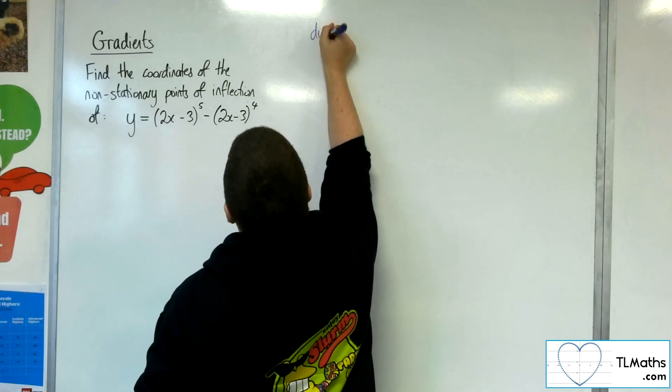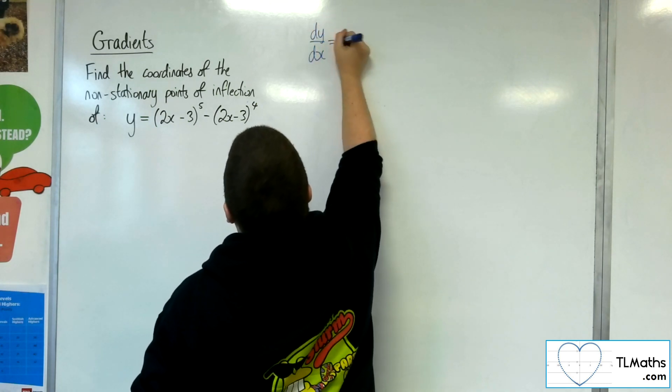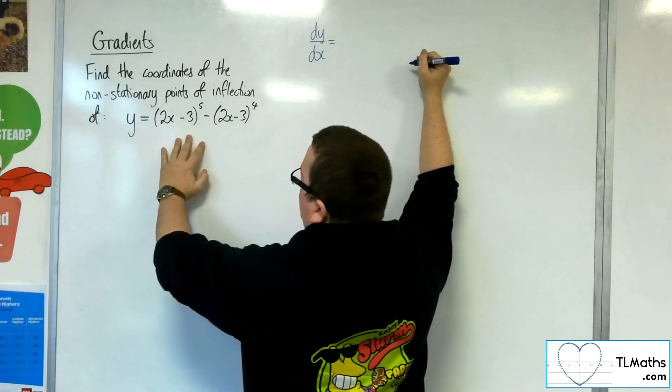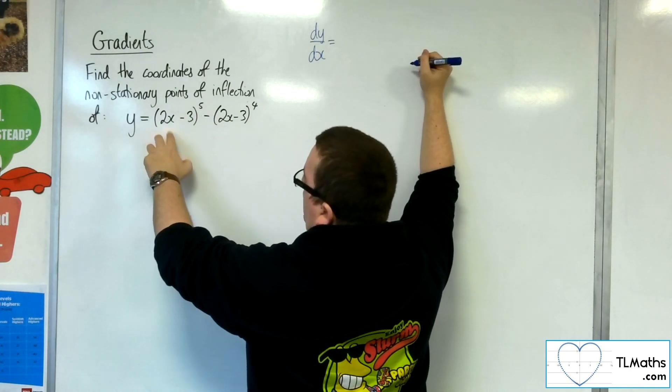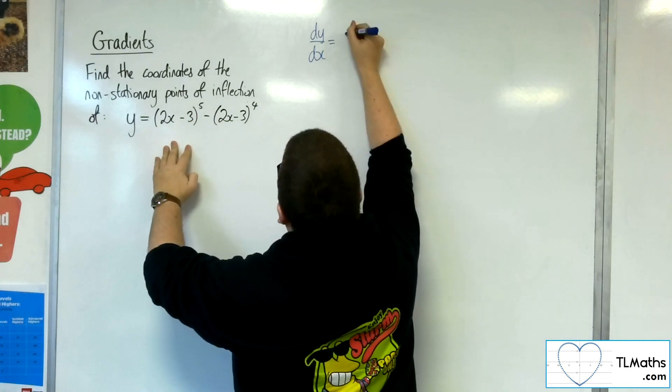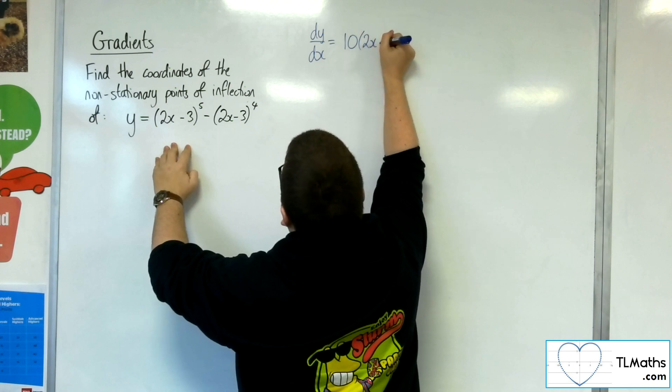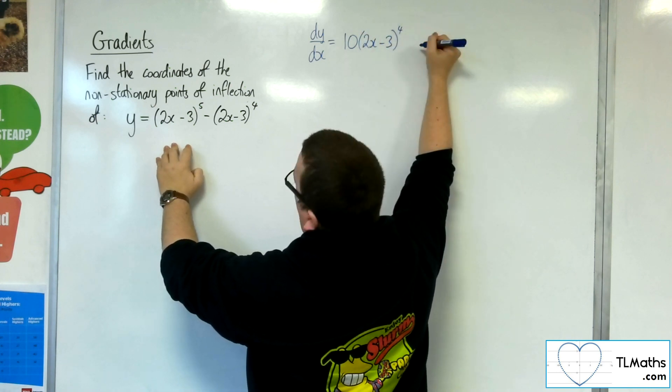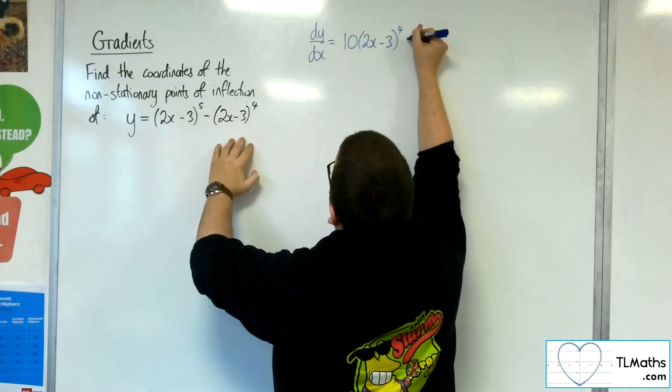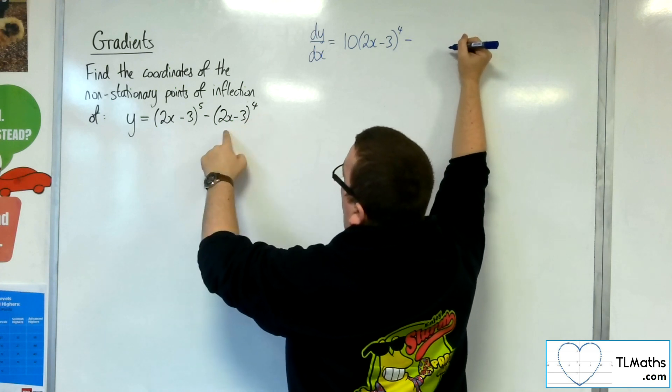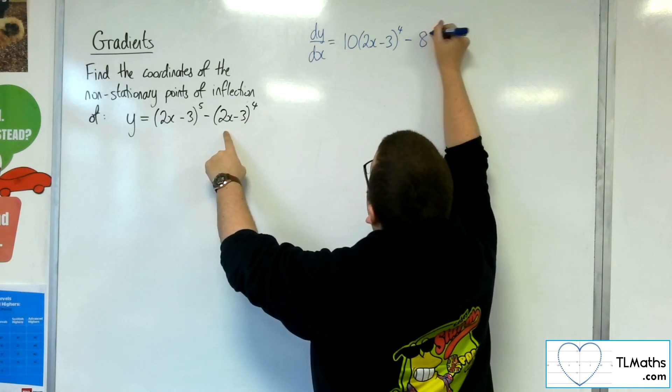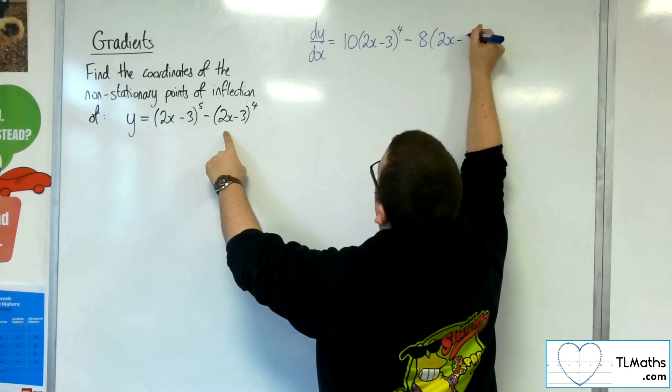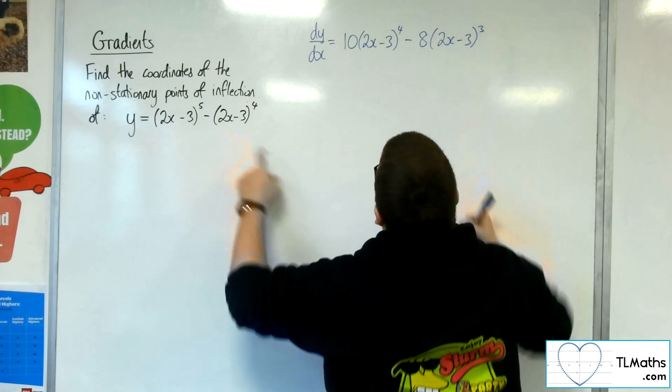So let's see this. We're going to first of all find dy by dx. Differentiating each of these pieces using the chain rule, we've got the 5 coming down the front, we've got the 2 coming out to the front as well, so we've got 10, 2x minus 3 to the 4. And then differentiating this term, we've got the 4 and the 2 coming out to the front, so minus 8, 2x minus 3 cubed.